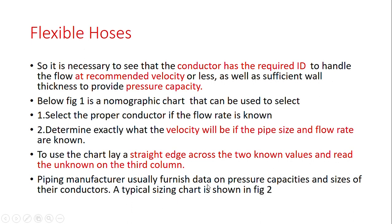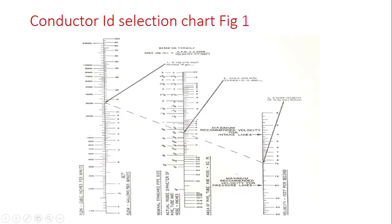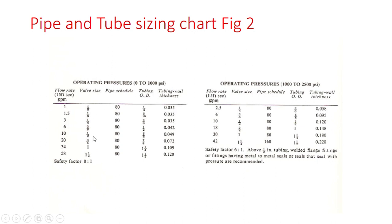The chart shows nominal pipe size or pipe schedule, tubing OD and wall thickness, GPM flow rate, velocity, and safety factor — for example 6-to-2. Fittings such as tubing weld flanges and fittings having metal-to-metal seals, and seals that seal with pressure, are recommended.